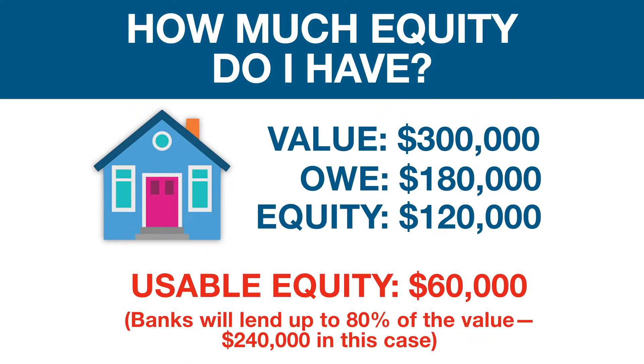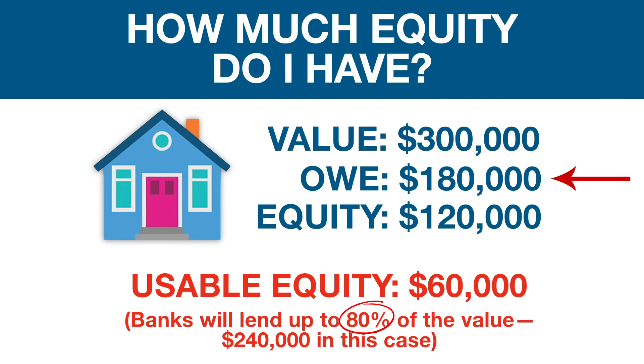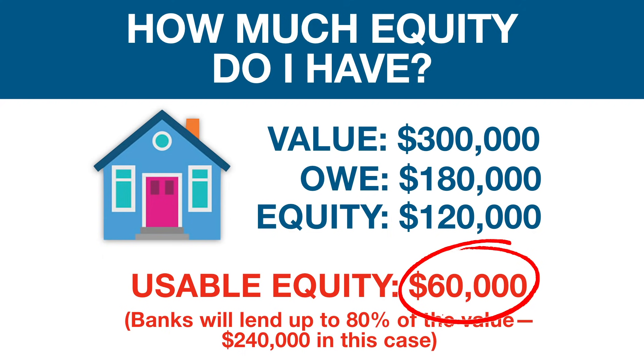Does that mean that if I have $120,000 of equity, the bank would actually loan me an extra $120,000 on the home — up to the full value of the house? No, the answer is no. There's what's called usable equity. Banks will lend up to 80% of the value. 80% of $300,000 is $240,000. So if I owe $180,000 and the bank will lend up to 80% of the value, which is $240,000, then I really only have $60,000 of usable equity.